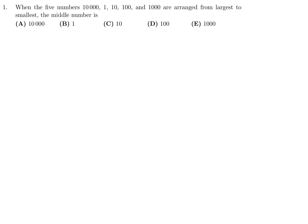Let's arrange them from largest to smallest. It would be 10,000, then 1,000, then 100, then 10, and then 1. The middle number is obviously 100, so number 1, the answer is D.